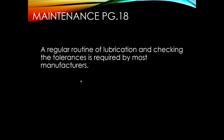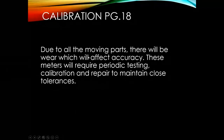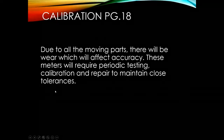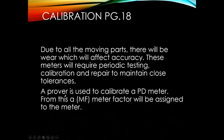Maintenance is fairly basic — regular routine lubrication and checking tolerances are required by most manufacturers. Calibration: due to all the moving parts there will be wear, which over time affects accuracy. These meters require periodic testing, calibration, and repair to maintain close tolerances. A prover will be used to calibrate a PD meter, from which we get a meter factor that we can apply to ensure proper readings.